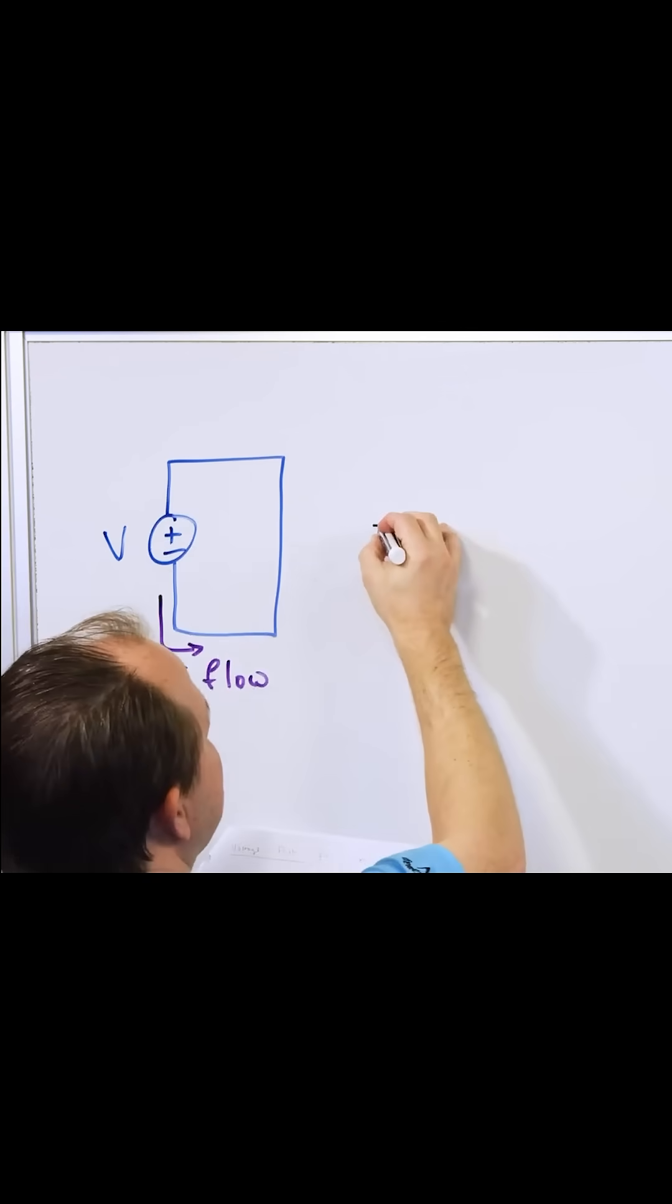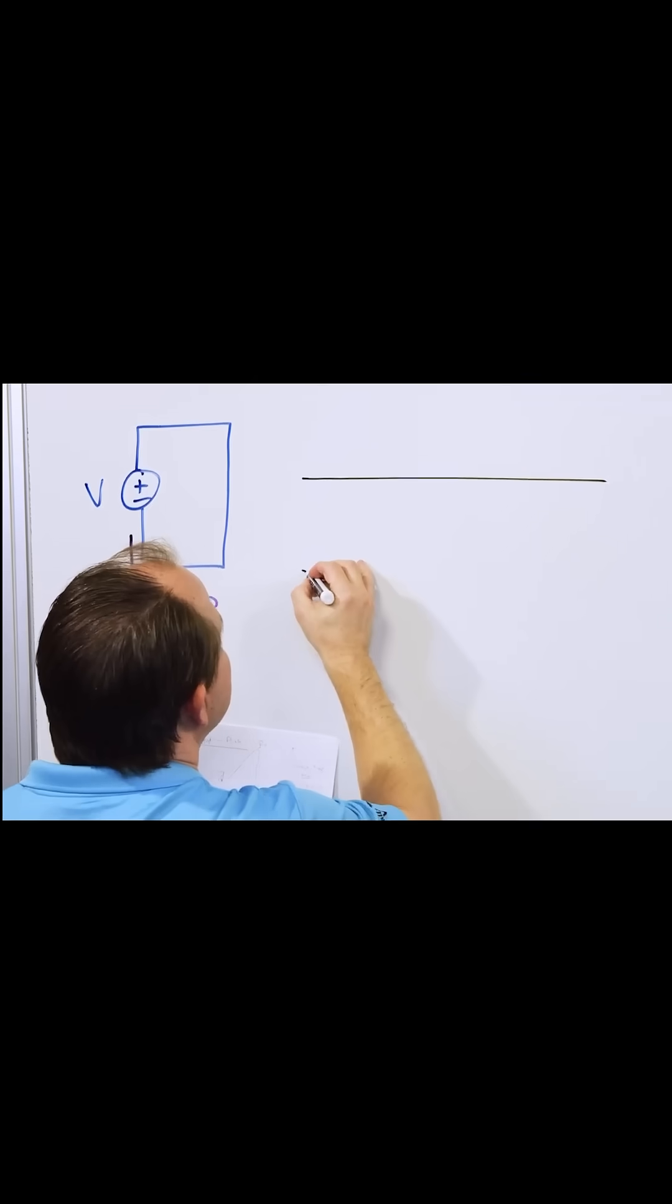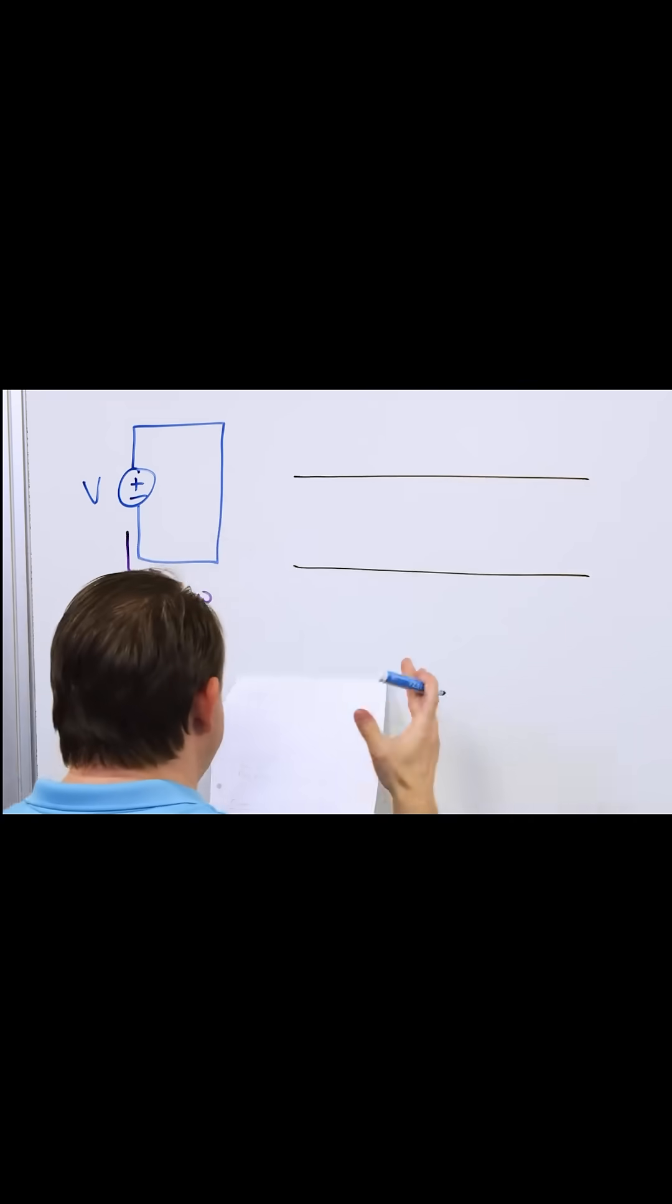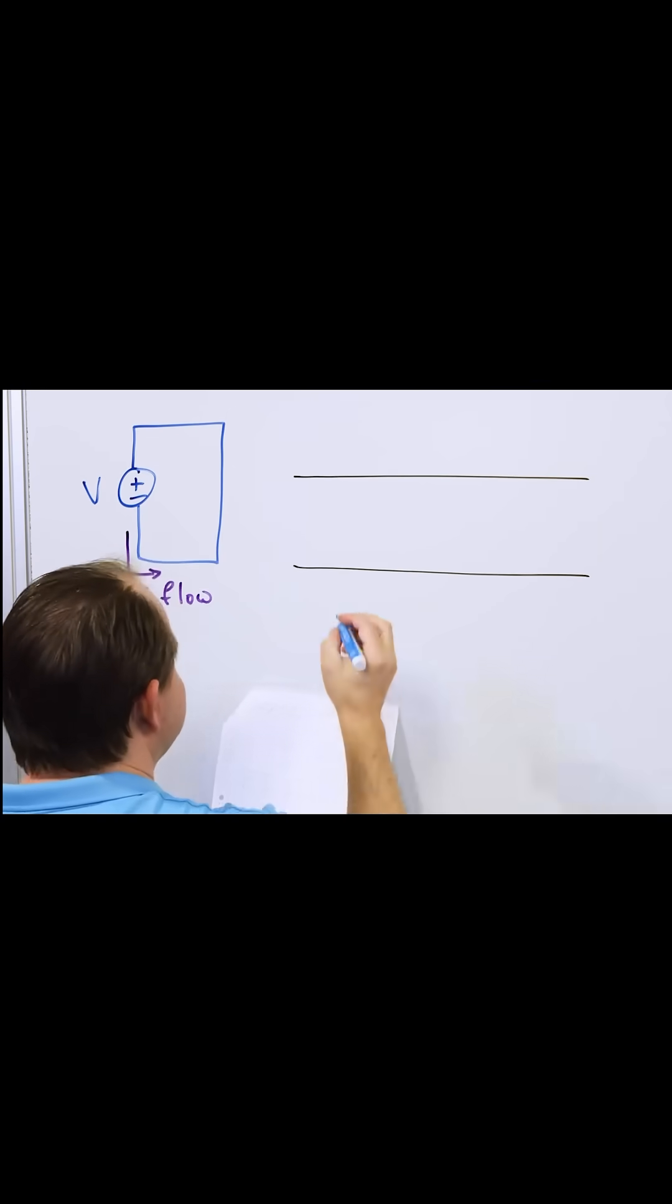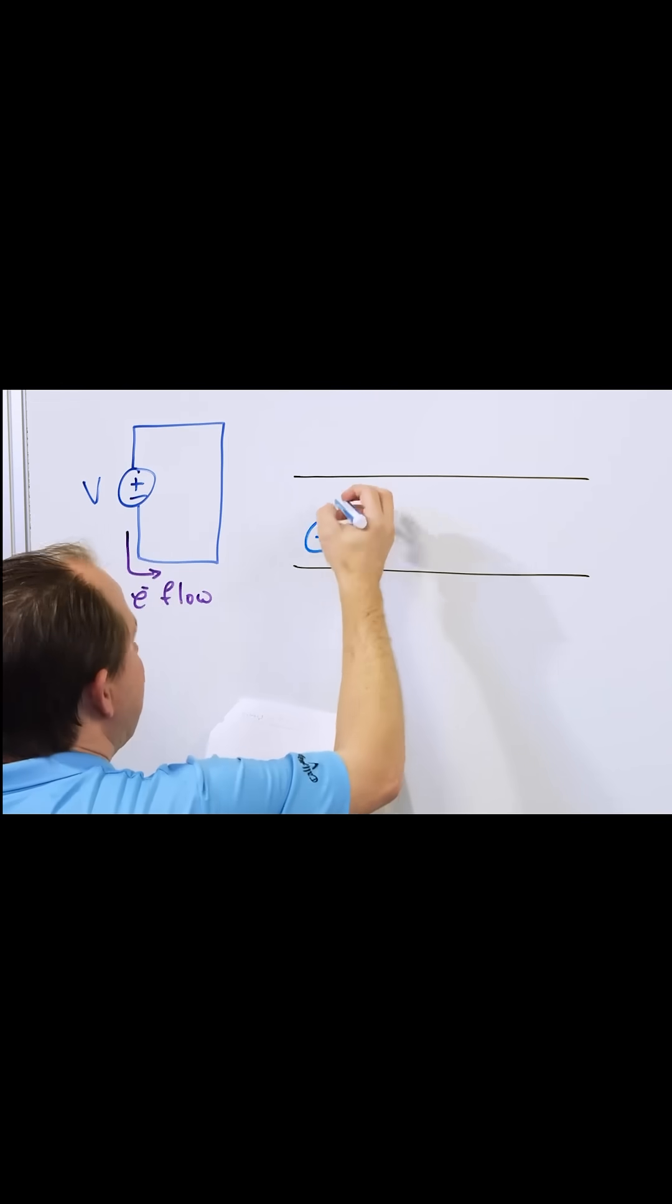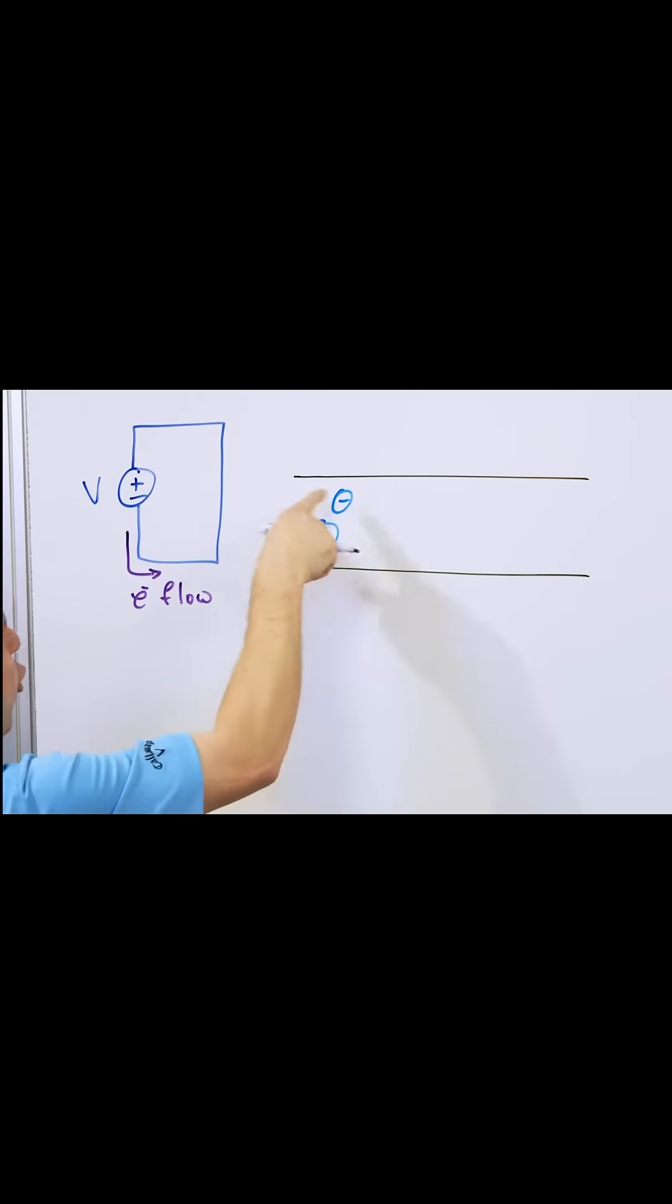Think about this wire as a hollow tube, you can think about that tube that I had a second ago, and inside are copper atoms or whatever atoms there are, and every atom has some nucleus with a positive charge and some electrons with a negative charge which are orbiting around.